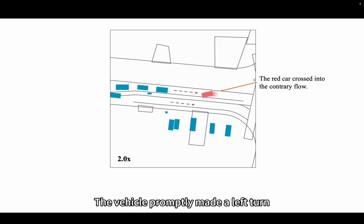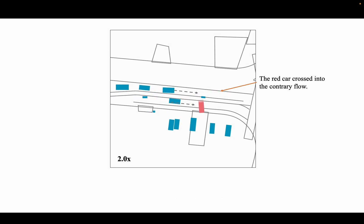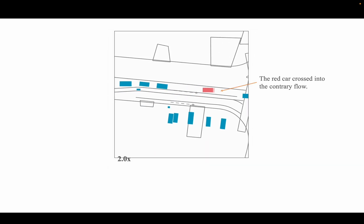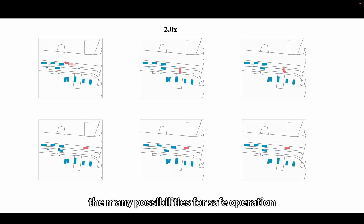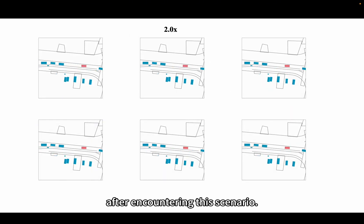The vehicle promptly made a left turn into a parking space on the left side, allowing other vehicles to proceed smoothly. Other rollout results illustrate the many possibilities for safe operation after encountering this scenario.